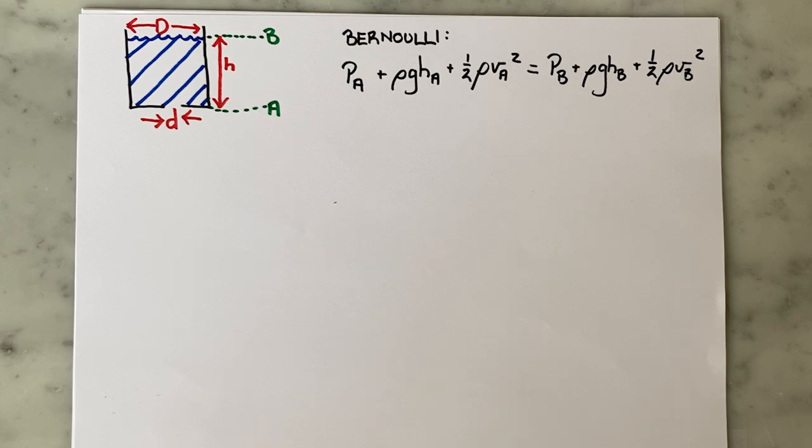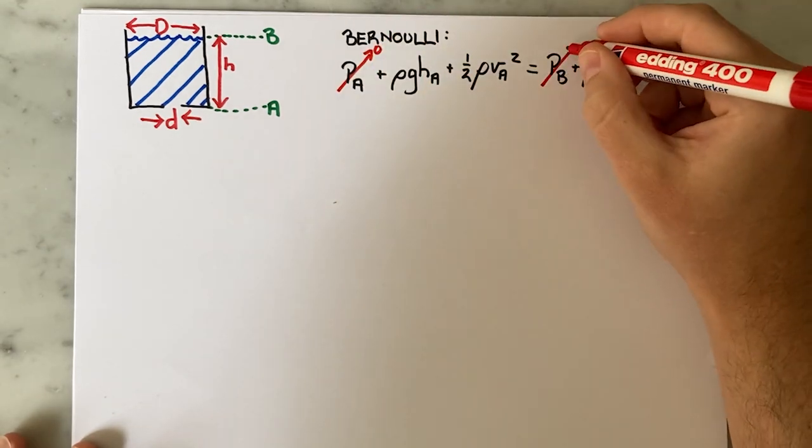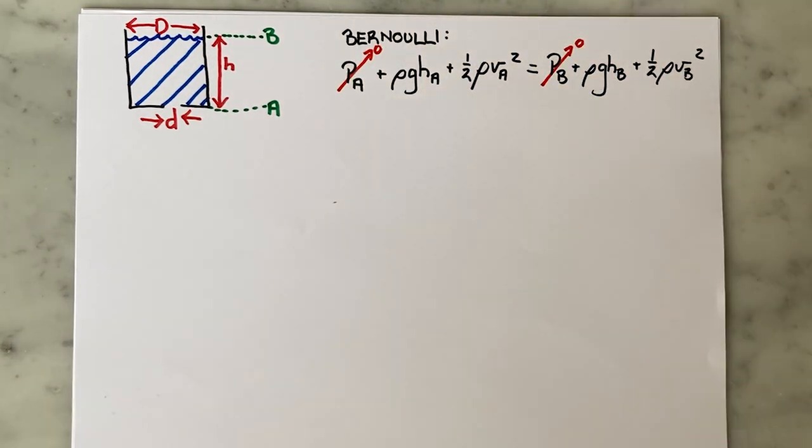The first thing to note is that we can get rid of both pressures because the tank is open to atmospheric pressure both at the top and at the drain point. Since both are atmospheric pressure, they will cancel each other out. Next we define the height of A as the zero height line so we can get rid of another term.